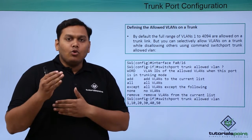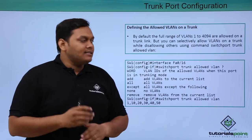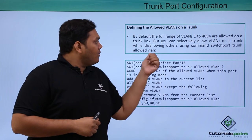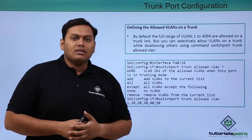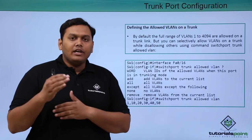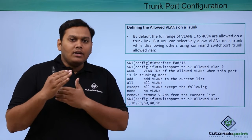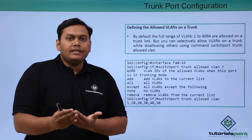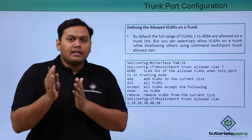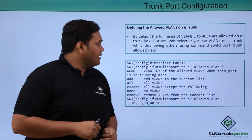To select only some VLANs by disallowing others, you can use the switchport trunk allowed VLAN command. This allows you to specify only certain VLANs to be created and to access that trunk link.